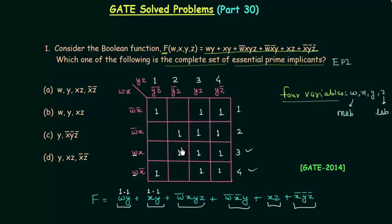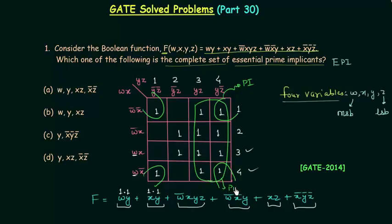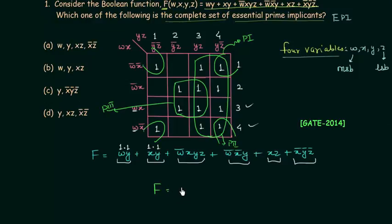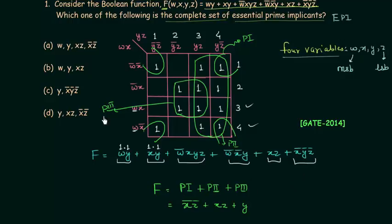In order to find out essential prime implicants, we need to make groups of 1s. First, I will combine these four 1s at the corners and call it p1. Then I will combine these eight 1s and call that group p2. After this, I will combine these two 1s and call this group p3. So the function f is simply equal to p1 + p2 + p3. From p1 we have x'·z'. From p2 we have x·z. From p3 we have y.